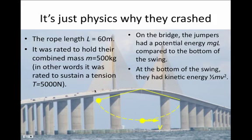On the bridge, when they're located up here, the jumpers had a potential energy MgL compared to the bottom of the swing. At the bottom of the swing, they lost all of that potential energy MgL, but it was converted into kinetic energy because they speed up as they fall toward the bottom of the arc.